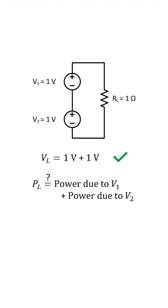Let's try to use superposition to find the power due to source 1. If I zero out source 2, and then use V²/R, I get 1 watt.